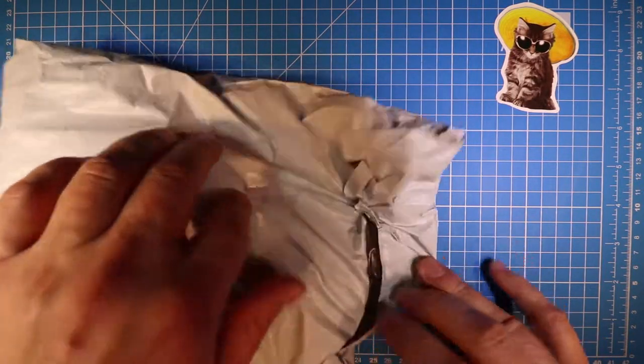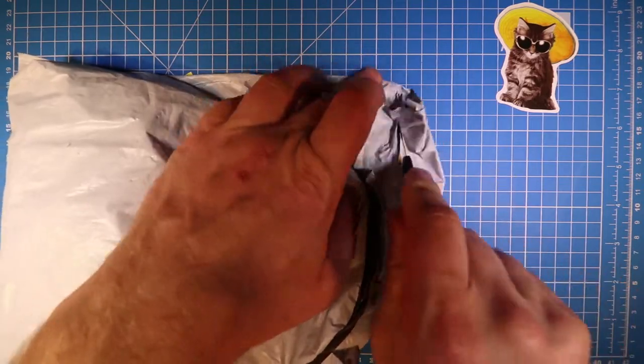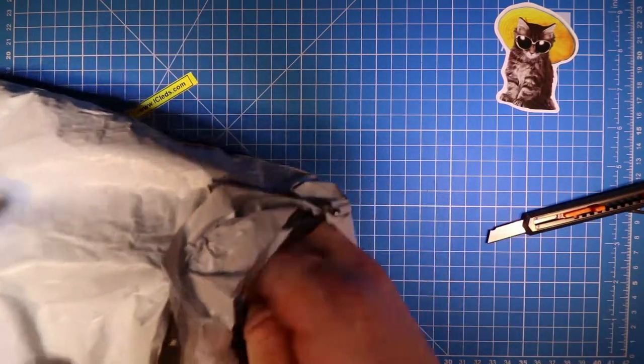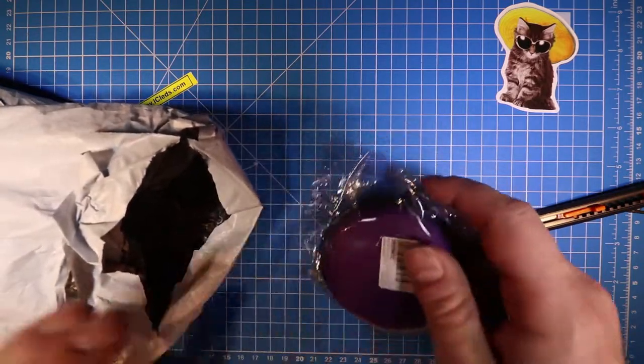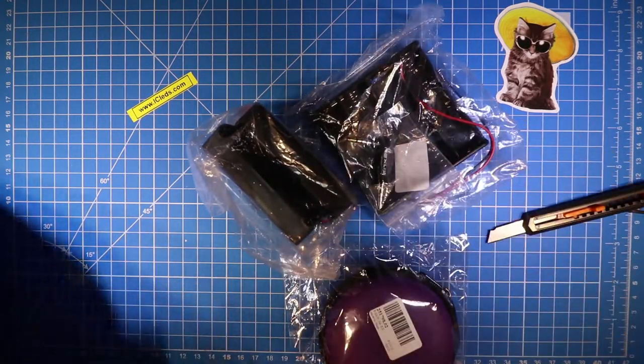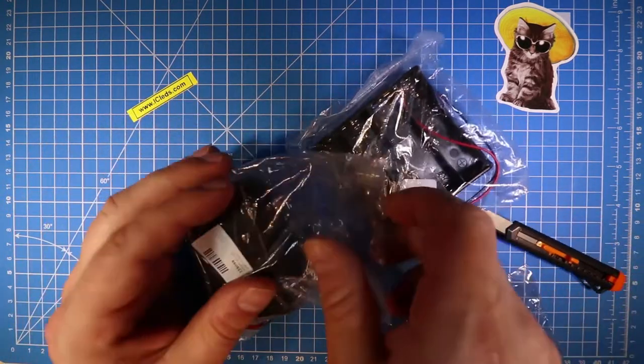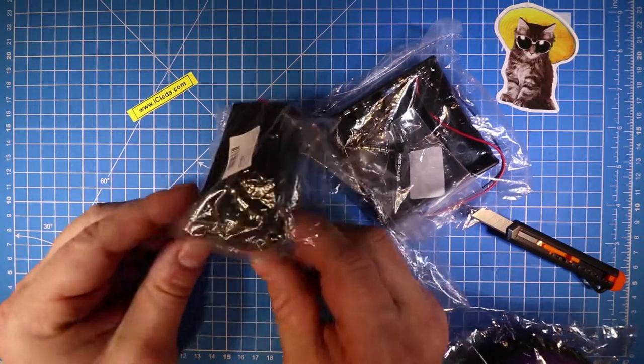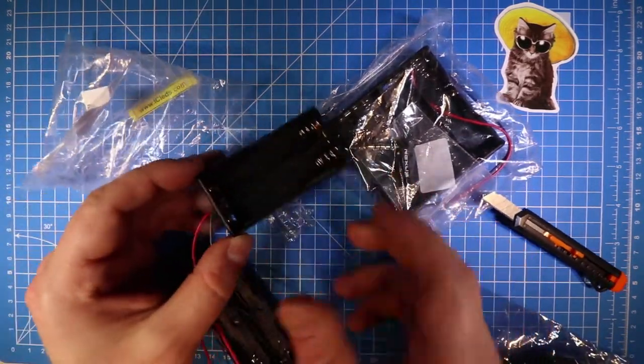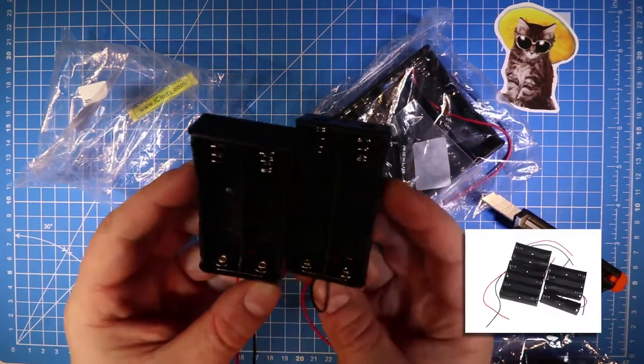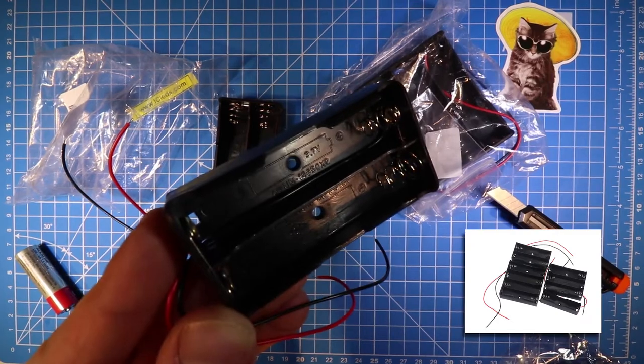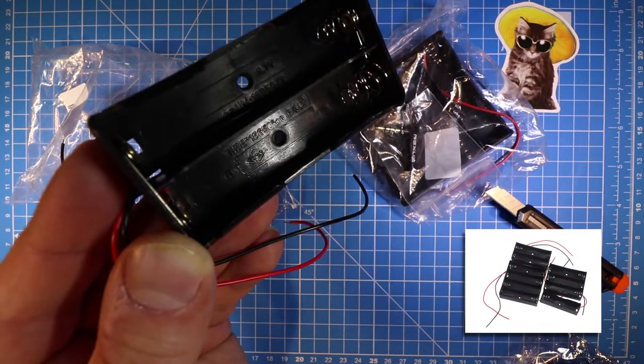First one, the classic Aliexpress bag. For 3.7V batteries, size 18650.